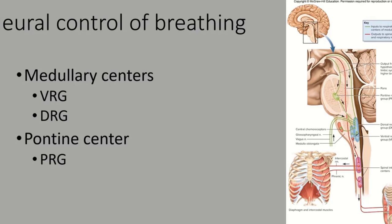The pontine respiratory group also times your breathing based on certain activities. If you're giving a speech, you don't stop in the middle of a word to take a breath — almost without thinking, you take a breath at the end of a sentence during a natural pause. When you're singing, you breathe in very specific spots. These things are under the control of the PRG, which gives input to the VRG and DRG.